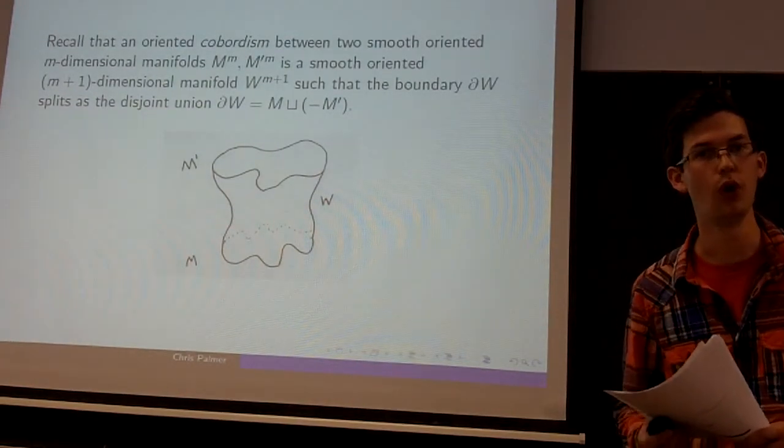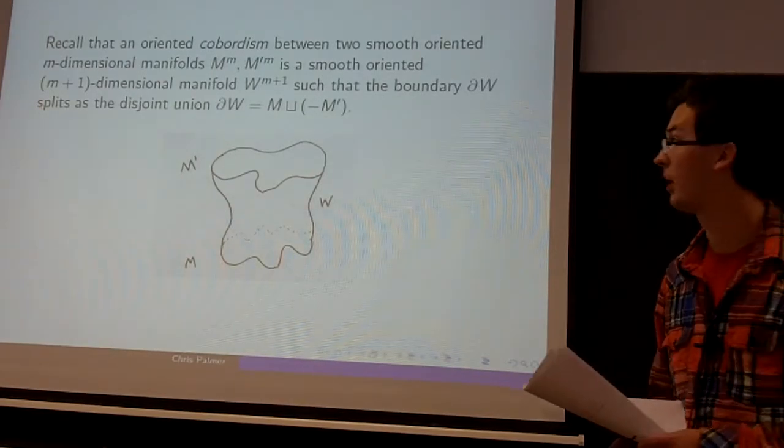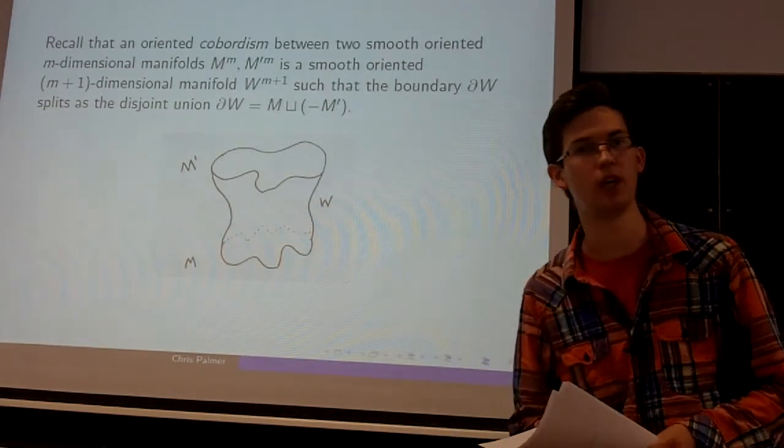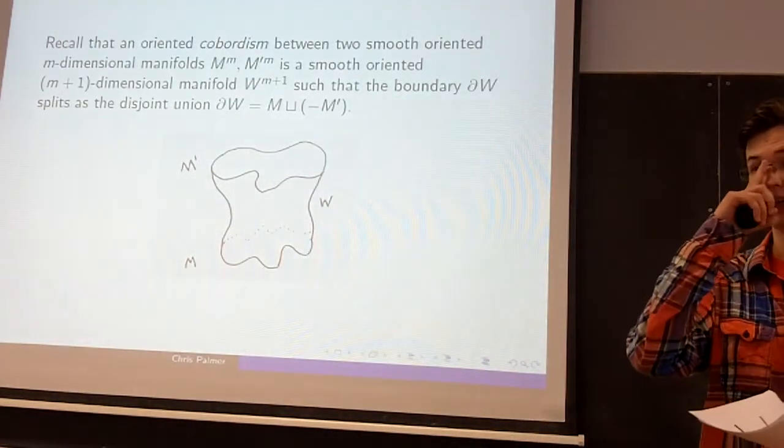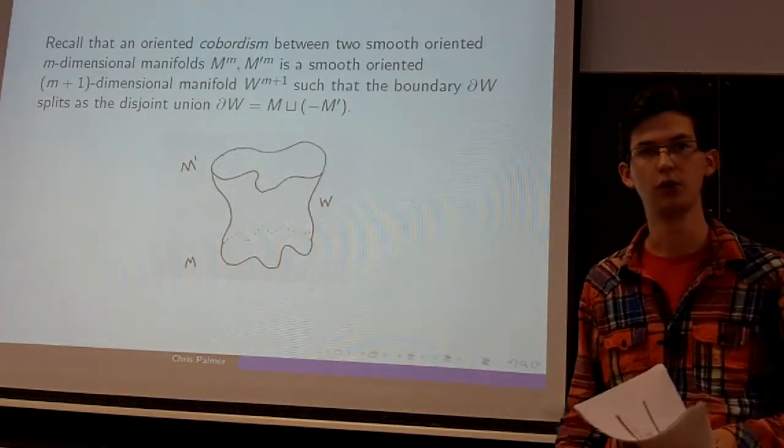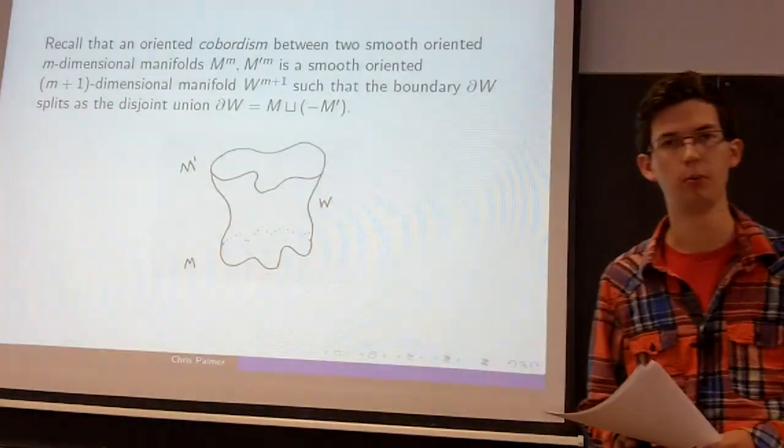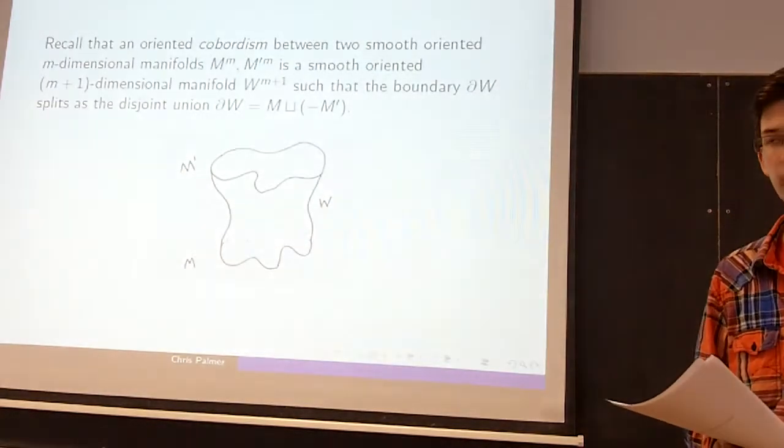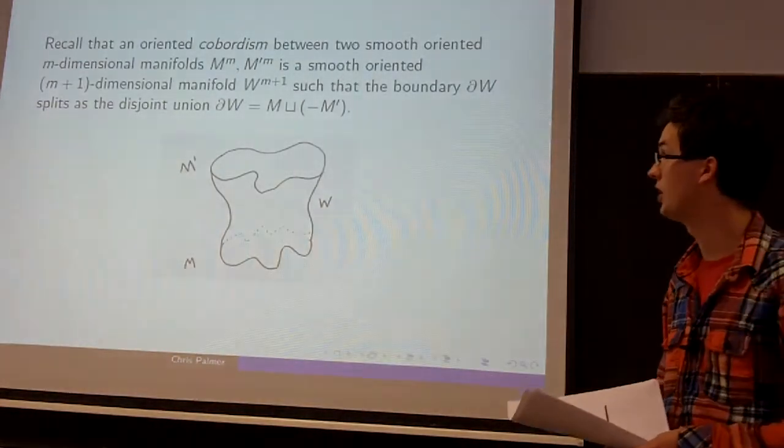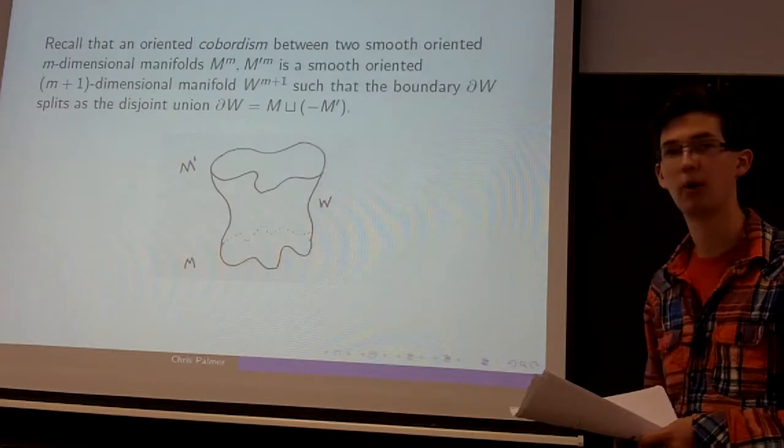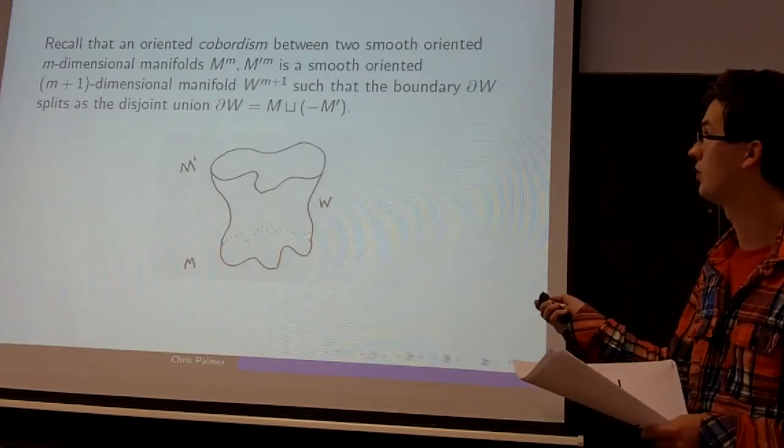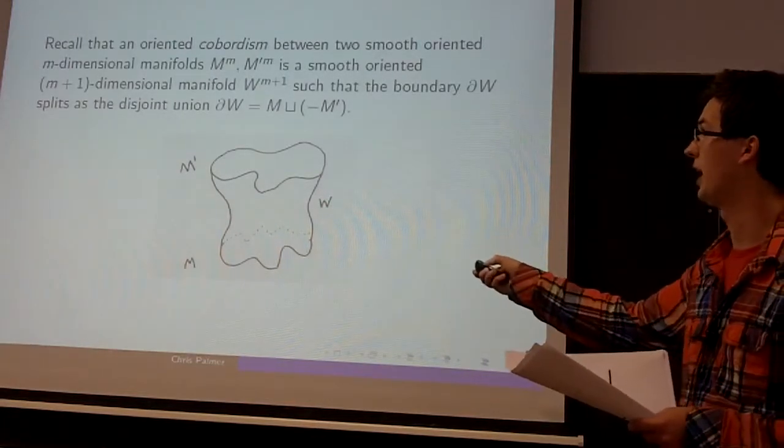If we have two smooth-oriented M-dimensional manifolds, M and M', we'll say they're cobordant if there's some smooth-oriented manifold W of one dimension higher with the property that the boundary of W splits as the disjoint union of M and M', but with the reverse orientation. So this is the general picture we have.